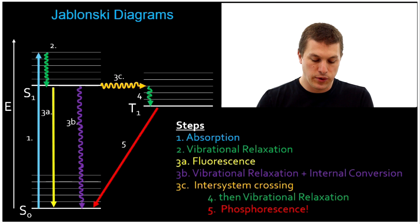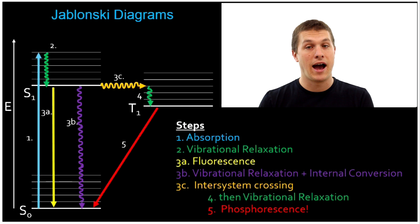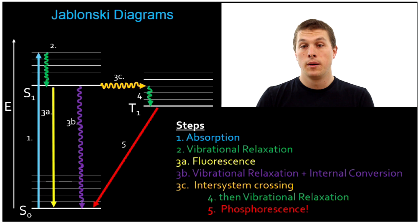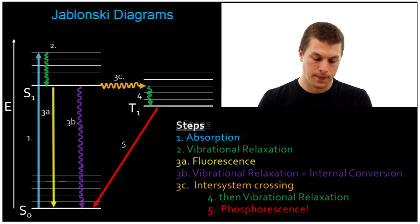All you need to know is we have a bunch of states here, and we're pushing electrons between them through different mechanisms — either interacting with our environment and giving off heat (all those squiggly lines are about giving off heat), or by giving off light or absorbing light. So let's take a look at each of these processes step by step.